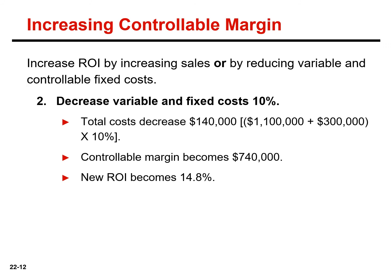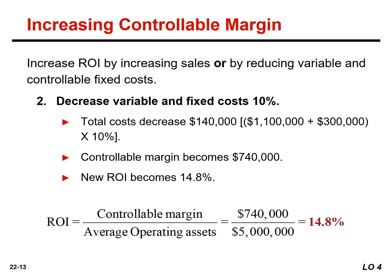If we decrease both variable and fixed costs by 10%, total cost will decrease by $140,000 — found by taking $1.1 million of variable cost plus $300,000 of fixed cost and multiplying by 10%. The controllable margin becomes $740,000 (original $600,000 plus $140,000), and the new ROI is 14.8%. This is clearly beneficial when the reduction results from eliminating waste and inefficiency, but a reduction from cutting expenditures on vital activities such as required maintenance and inspections is not likely to be acceptable to top management.